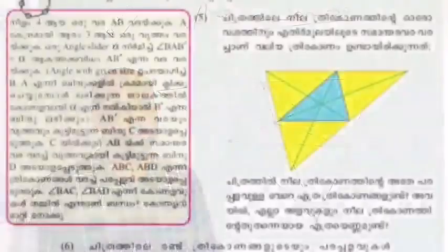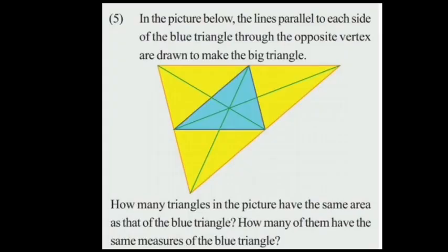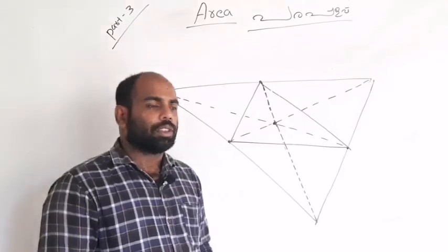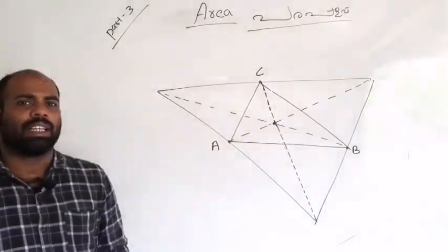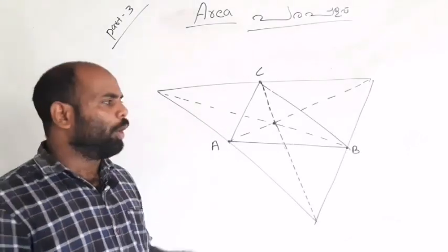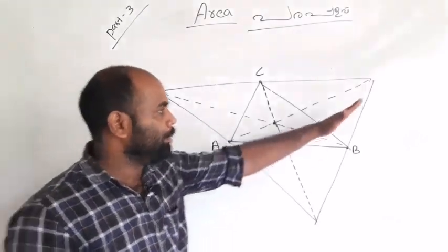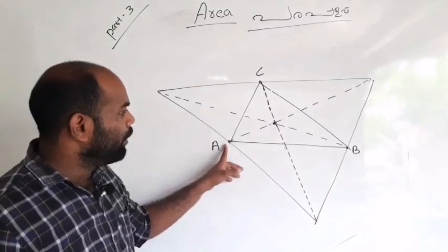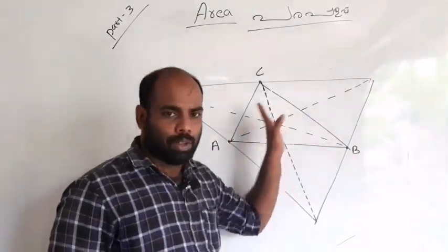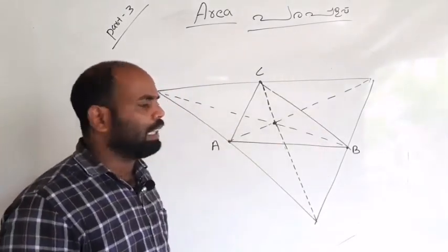We'll see you in the next video. There is a triangle inside the center. I was working on the triangle. If you are using the triangle in the center, I can't call it ABC. If you are using the triangle in the same area, there are so many triangles. You can see the same thing called A, B, C.